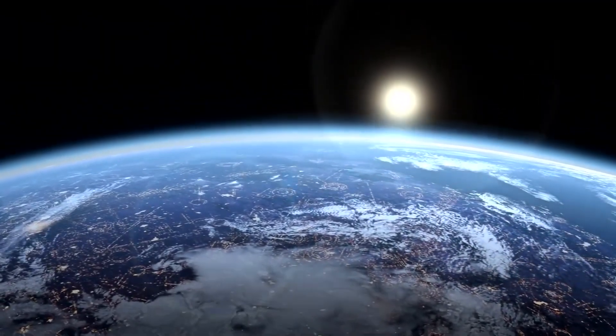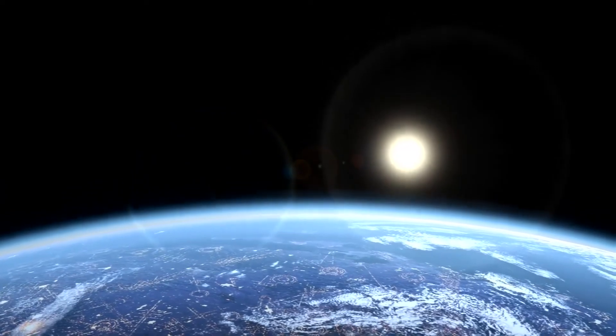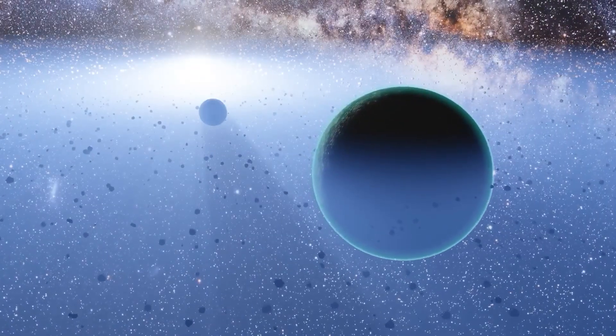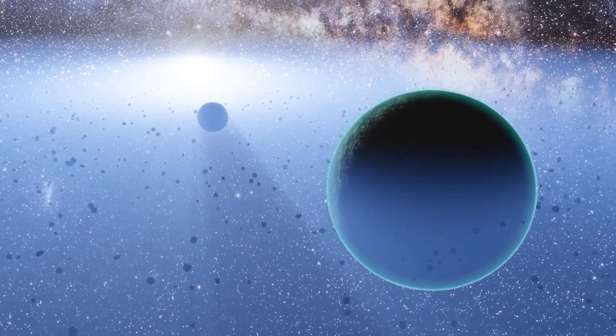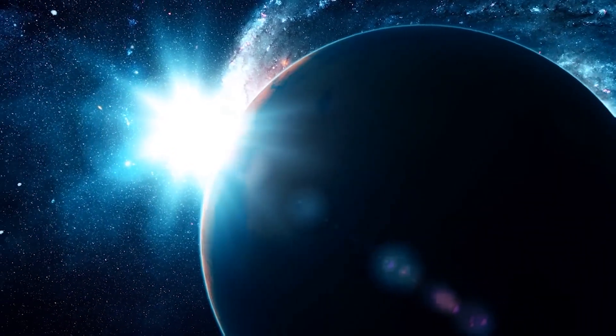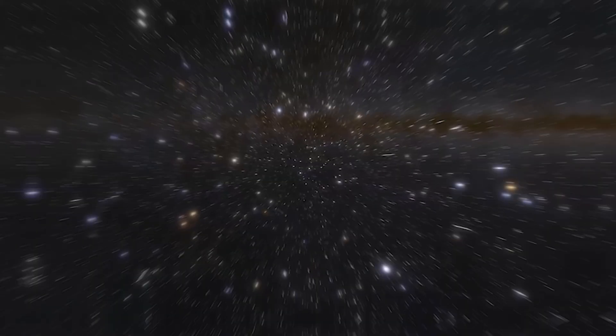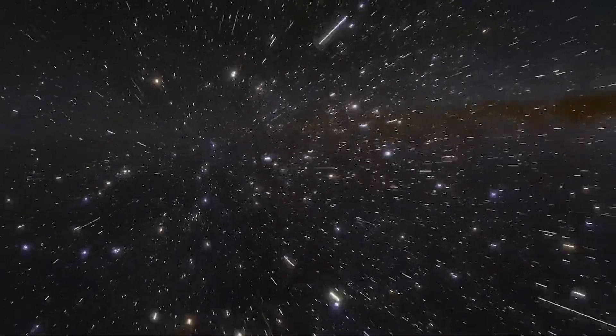While most tidally locked planets show extreme temperature gradients, the emissions and atmospheric anomalies on Proxima b's dark side make it an outlier. These findings suggest that Proxima b may host processes unlike anything observed elsewhere in the universe.